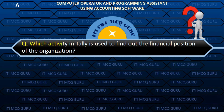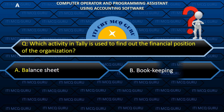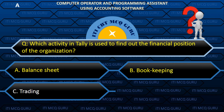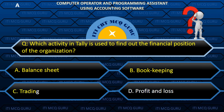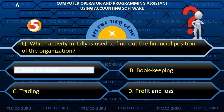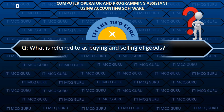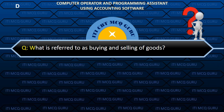Which activity in Tally is used to find out the financial position of the organization? A. Balance sheet.